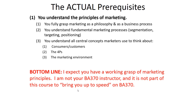Sometimes students get a little frustrated with prerequisites because they seem like arbitrary barriers keeping you from taking the course and graduating on time. So let me talk a little bit about what the actual prerequisites are for this course — why do we require you to have those two classes with a certain grade level? The BA 370 prerequisite ensures that you understand the basic principles of marketing: what marketing is as a philosophy and as a business process, basic processes like segmentation, targeting, positioning, and branding. Basic marketing concepts that all marketers use in their day-to-day life — such as the difference between consumers and customers, what the four P's are, what the marketing environment is constituted of — are terms I will use in this class and expect you to know. It is not my responsibility nor the goal of this course to teach them for you.